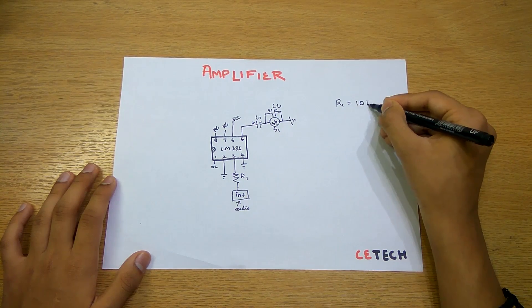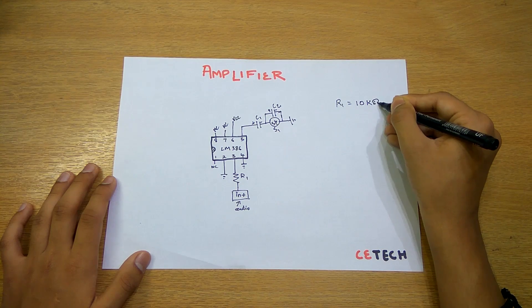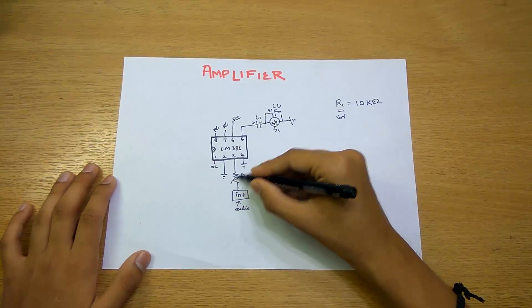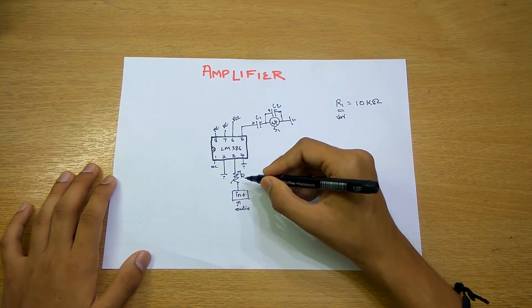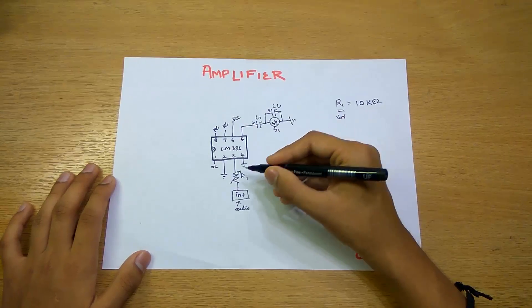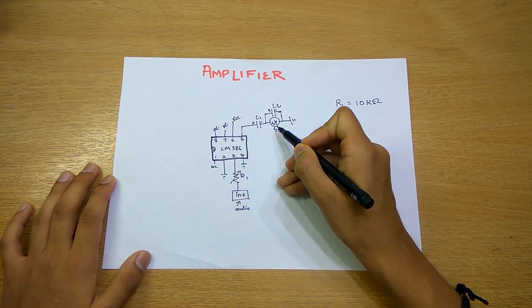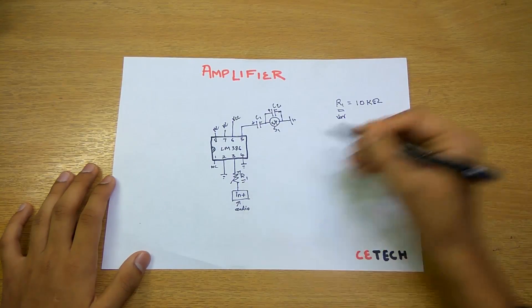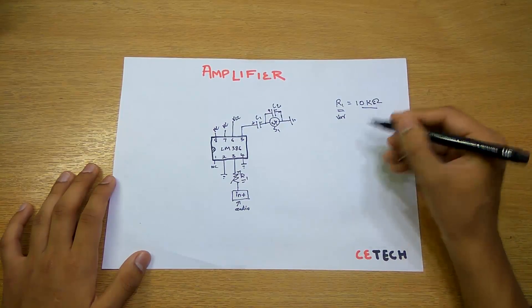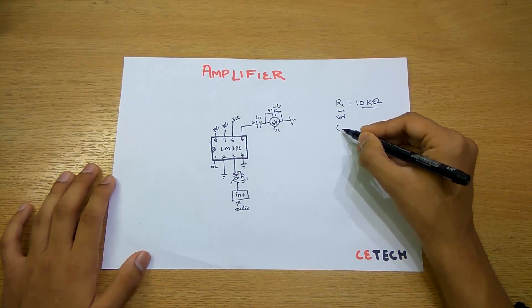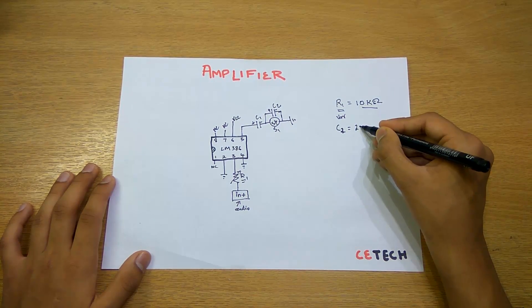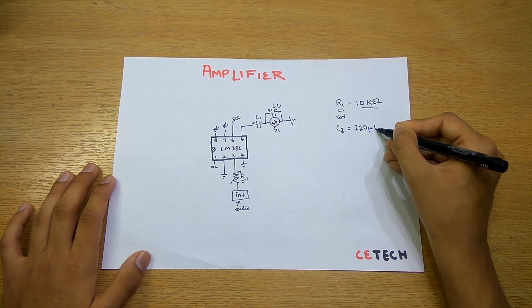Firstly, R1, the value of resistance one is 10 kilo ohms. We can also make this as variable, so this arrow comes in here. Due to this, we can change the volume of the audio coming out from the speaker. Right now we will put it as fixed as 10 kilo ohms.